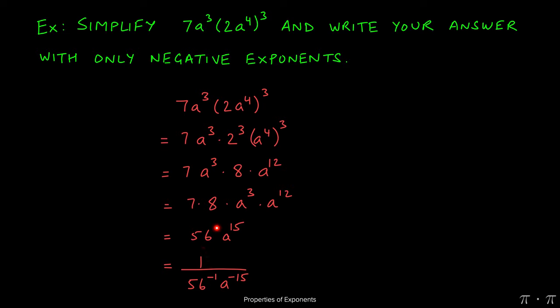The 56 had a power of one here so when we move the 56 to the denominator the one power turns into a negative 1. a to the fifteenth when it moves to the denominator the 15 power turns into a negative 15. Now at this stage we can see that all the terms have negative exponents.